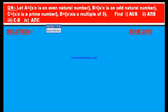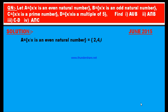This question appeared in June 2015. Here is the solution. A = {x | x is an even natural number}. The even natural numbers start from 2: 2, 4, 6, 8, 10, and so on.